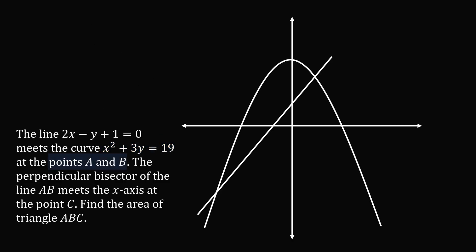Now the line meets the curve at two points A and B. So how do we solve for those two points? Well, we know the equations of these two graphs, so we'll set them equal to each other. Now we've solved for y in both cases, so we can set these equations equal to each other. 2x plus 1 equals 19 over 3 minus x squared over 3.